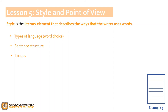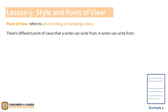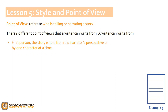Now that we have learned a bit more about style, let's move on to Point of View. Point of View is another type of choice a writer makes. Point of View refers to who is telling or narrating a story. There are different points of view that a writer can write from. A writer can write from first person point of view, where the story is told from the narrator's perspective or by one character at a time. Third person — the narrator is outside the story. You will need to be able to identify what point of view a writer is writing from when reading a text or passage.